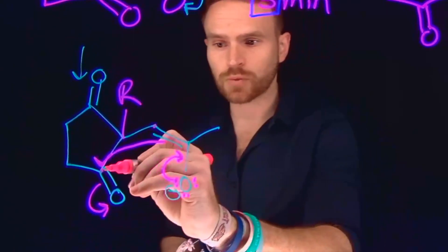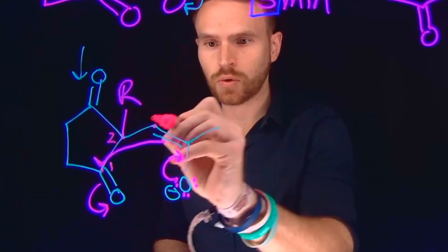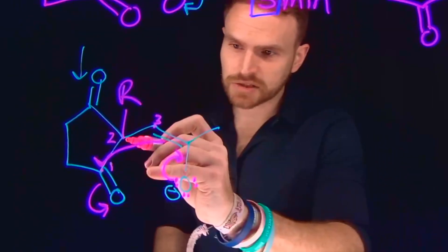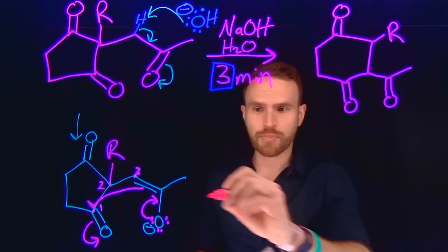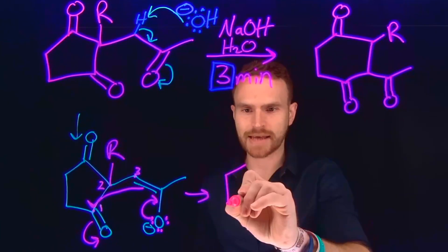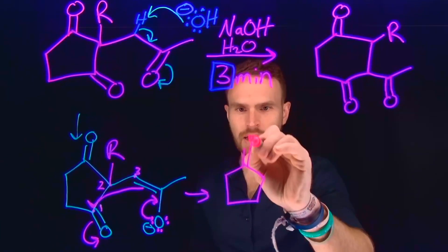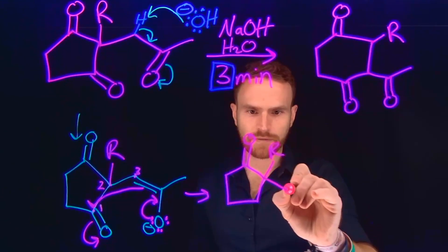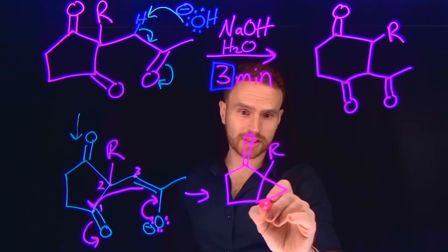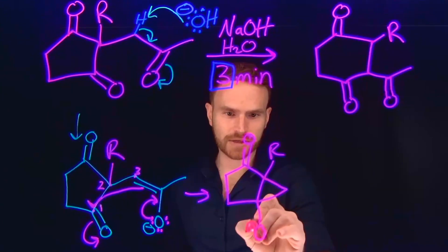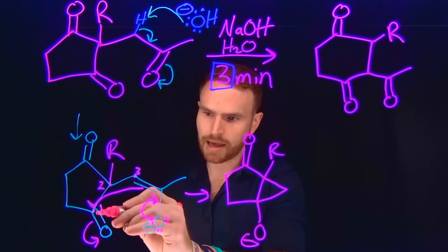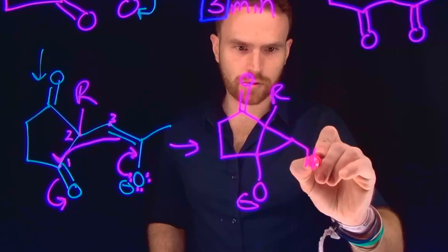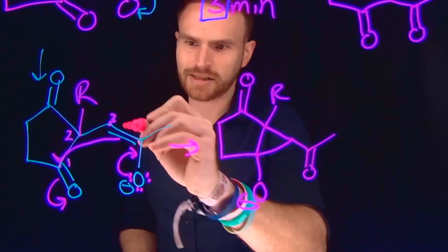Notice that means we're forming a 3-membered ring, or cyclopropane, adjacent to this 5-membered ring. The product of this transformation has that 5-membered ring still on it, with the ketone here and this R group. Now we've formed a 3-membered ring at this position, with our negatively charged oxygen formed at this position. The rest of our species is that ketone, which we've reformed in this enolate reaction.